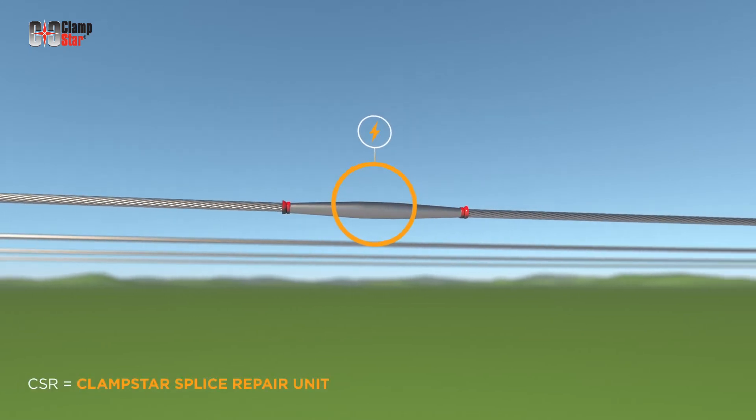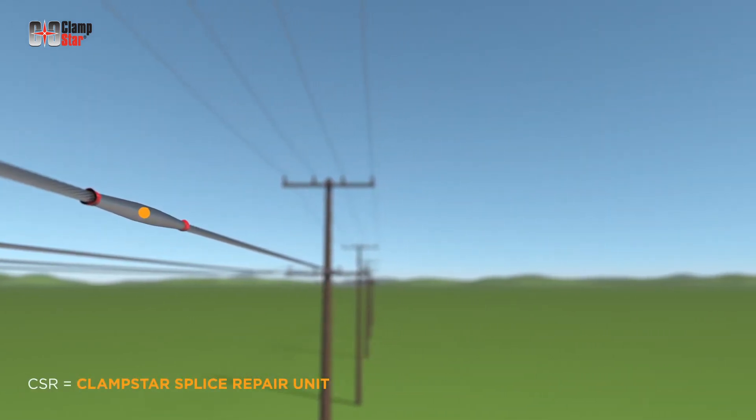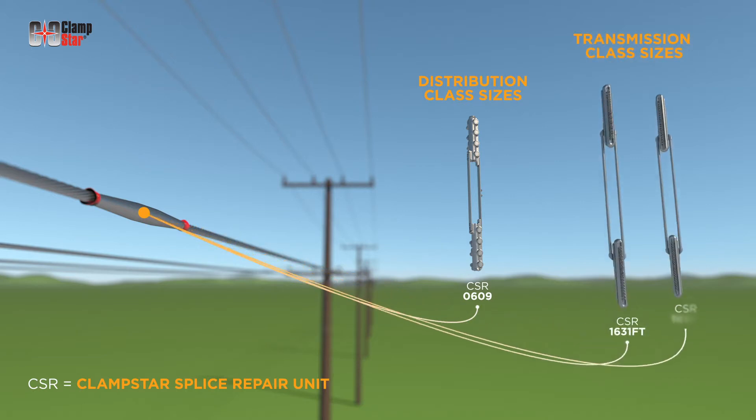This allows aged portions of infrastructure to be safely operated at temperatures well beyond their original design parameters. ClampStar Splice Repair Units are available in distribution class sizes and transmission class sizes.